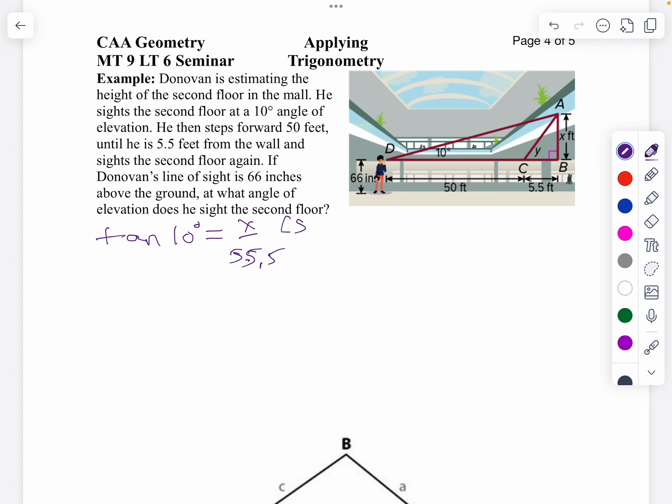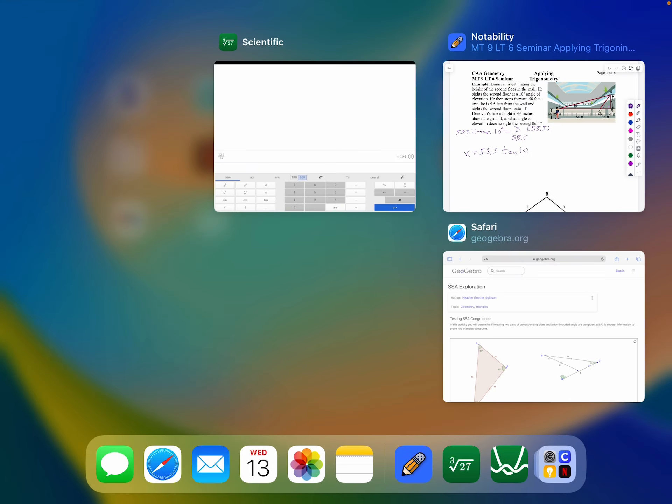we multiply both sides by 55.5, so then x is 55.5 times the tangent of 10 degrees. So let's use our calculator to find that out.